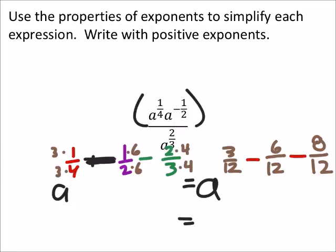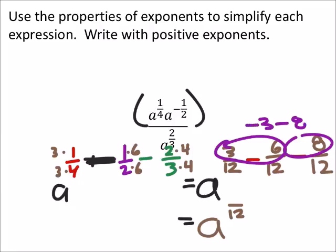So this would equal a to the power, I know I've got a denominator of 12, but up here I've got 3 minus 6 and then minus 8. So that's a negative 3 minus 8, which is a negative 11. And this one did say to write this as with only positive exponents. So I'm just going to reciprocate that and make it 1 over a to the power of 11 twelfths.